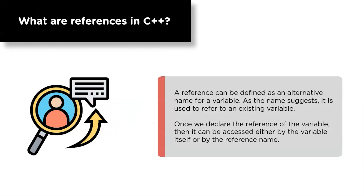A reference can be defined as an alternative name of the variable. As the name suggests, it is used to refer to an existing variable. It is basically used to store the reference of the variable and is stored using an ampersand sign. Although the reference and address are the same thing, their context is different. When talking about a reference variable, we call it a reference rather than an address. The variable can be accessed either with the variable name or by the reference name.